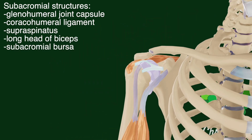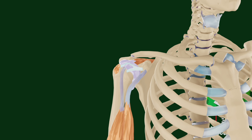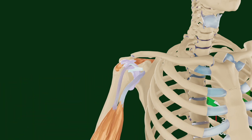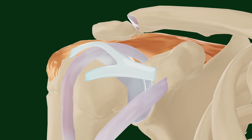There is also the subacromial bursa, which can be an isolated synovium by itself, or can be continuous with the glenohumeral joint capsule. With repetitive motion of the shoulder, more specifically with flexion or abduction, the friction can result in direct wear and tear of the subacromial structures, most commonly the supraspinatus.